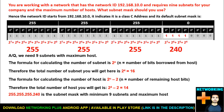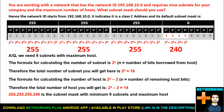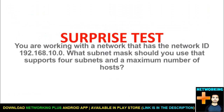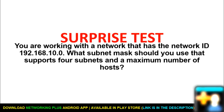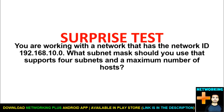Hope you have enjoyed watching this video. If you find it helpful, please hit the like button. Now it's time for the surprise test. Today's question is: you are working with a network that has the network ID of 192.168.10.0. What subnet mask should you use so that you get minimum 4 subnets with maximum number of hosts? Try to solve this and let me know the answer in the comments. Let's see who passes this surprise test.